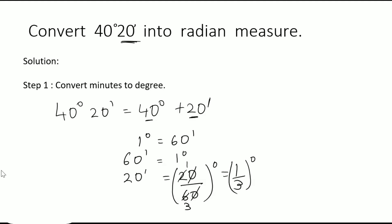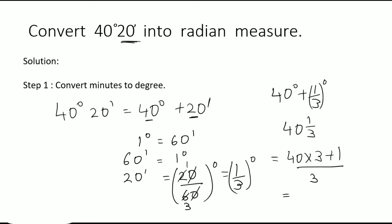So now we write this as 40 degrees plus 1/3 degree, which as a mixed fraction is 40 and 1/3. Converting to an improper fraction: 40 times 3 is 120, plus 1 gives us 121/3 degrees.